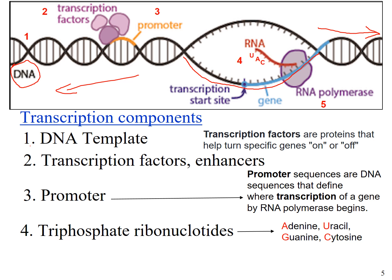We also need triphosphate ribonucleotides — these are your bases: adenine, uracil, guanine, and cytosine — that you need to make your mRNA. And finally, you need the enzyme RNA polymerase, which copies the message encoded in the DNA into an RNA molecule. So these are the five main components that you need for transcription.